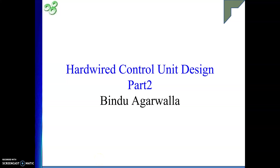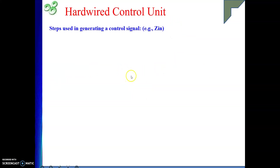Hello friends. In this video we will continue with our previous discussion. We were discussing hardware control unit design, and we will continue with the same topic. What we have seen in our last video is that to generate a control signal, we need to write the control sequence for instructions, and we need to find the particular signal appearing in which instructions and at which particular state number. I am considering single bus CPU organization.